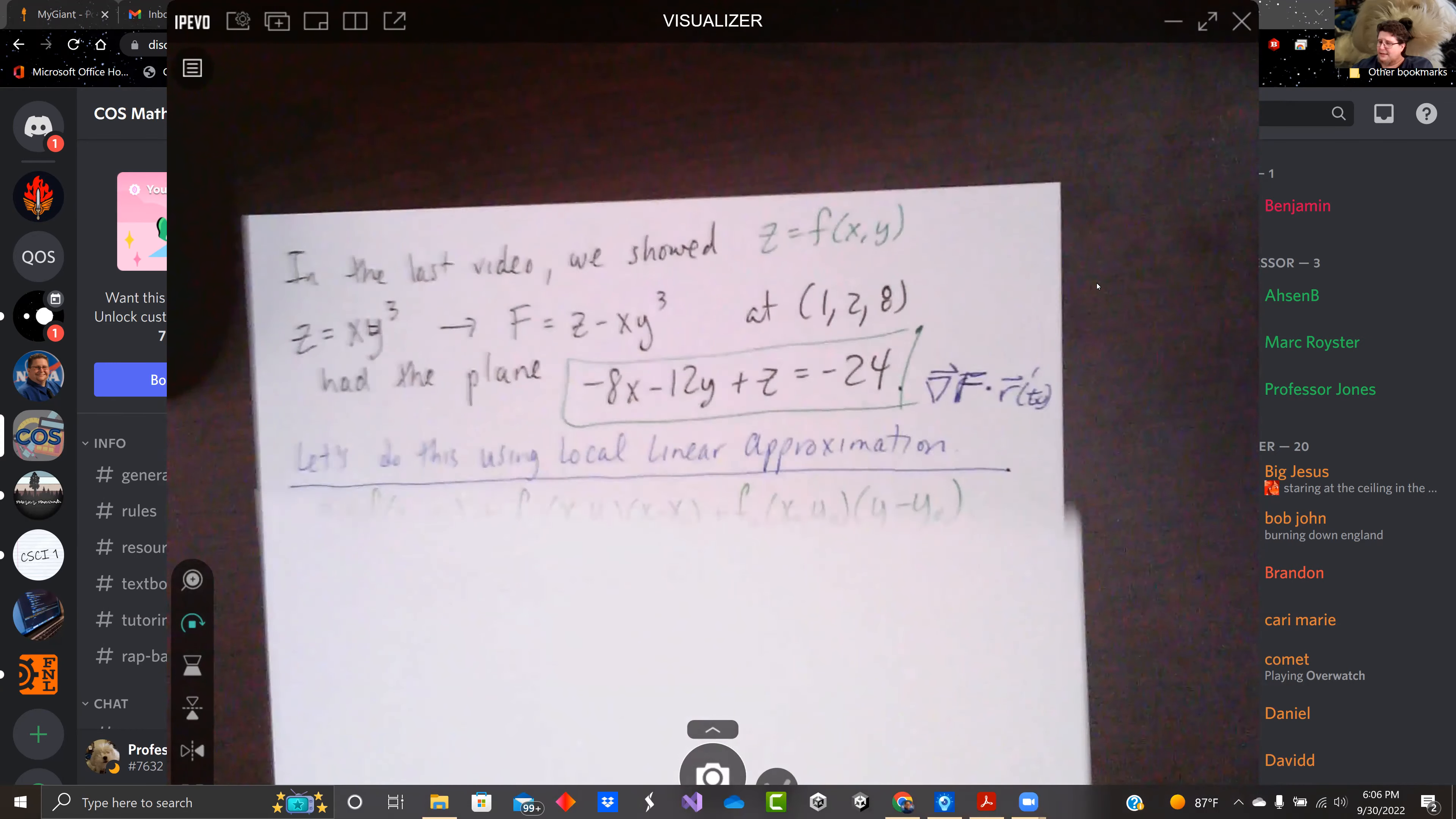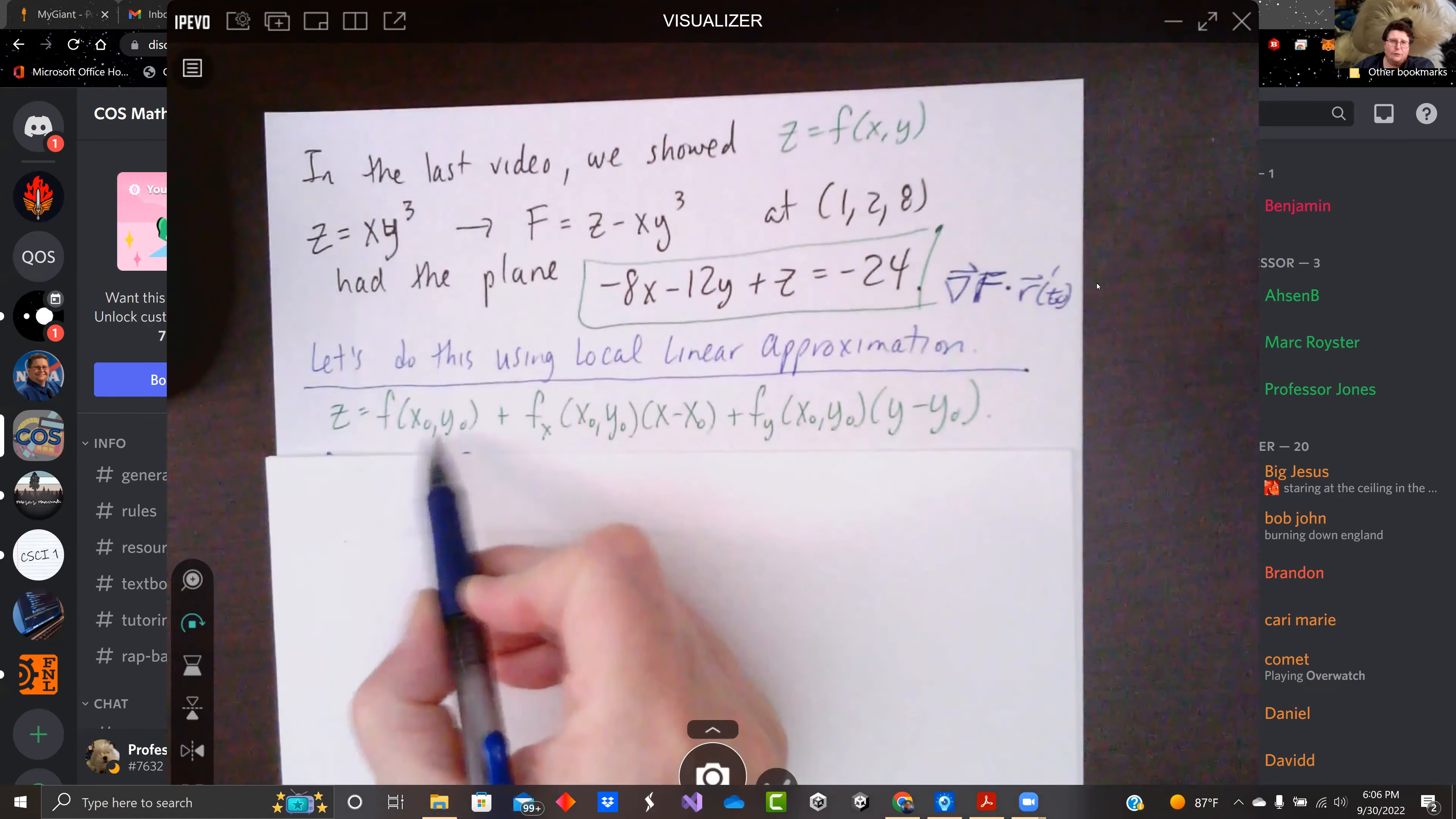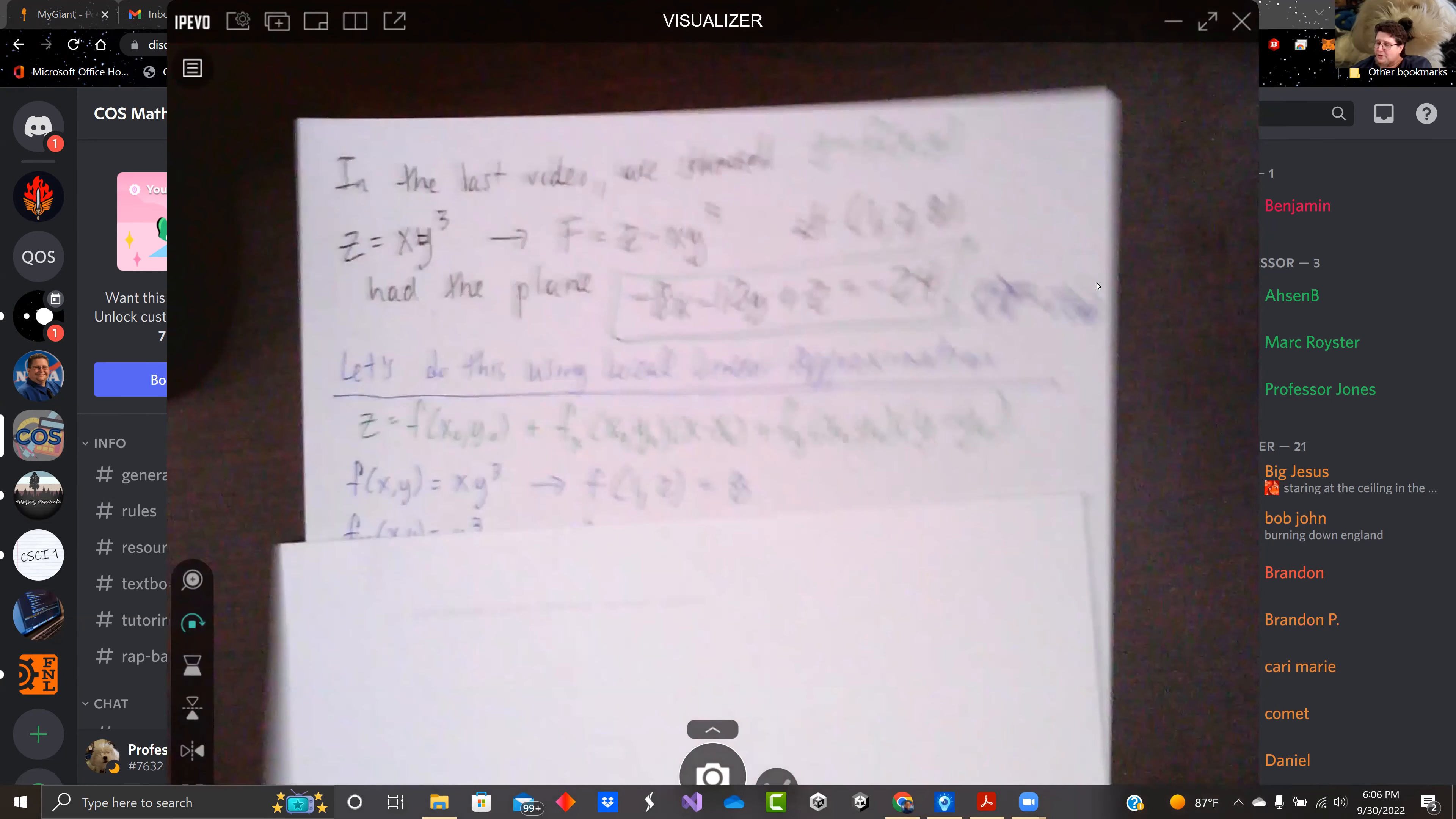So we need, that's our function, remember, for local linear approximation, we need the value of the function at f or at (x₀,y₀). We need the partials with respect to x and y evaluated at the same point. And then (x - x₀), (y - y₀) is pretty easy. We've got (x₀,y₀) right here. That part is really easy. So is all the rest of it.